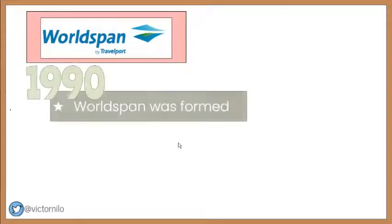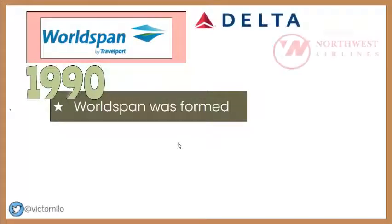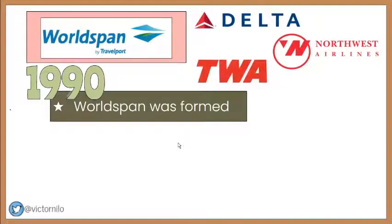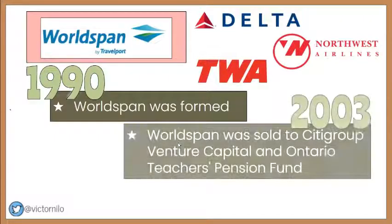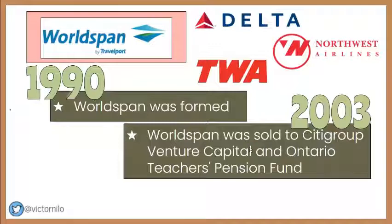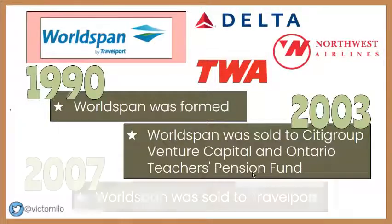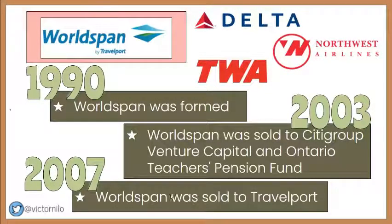WorldSpan was formed in early 1990 by Delta Airlines, Northwest Airlines, and Transworld Airlines to operate and sell its GDS services to travel agencies worldwide. In mid-2003, WorldSpan was sold by its owner airlines to Citigroup Venture Capital and Ontario Teachers Pension Fund, which in turn sold the business to Travelport in 2007.